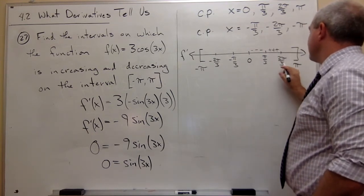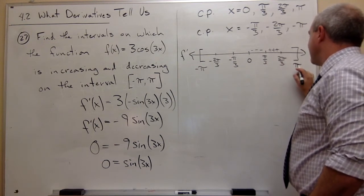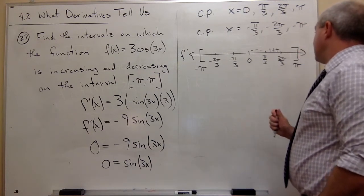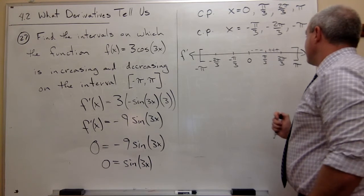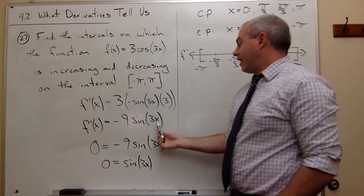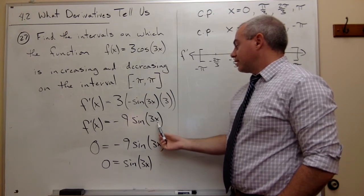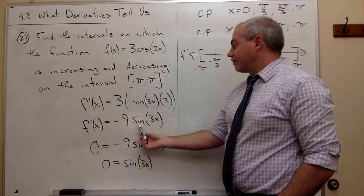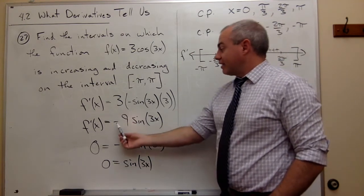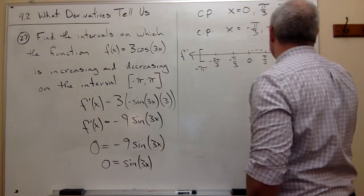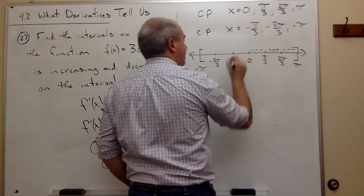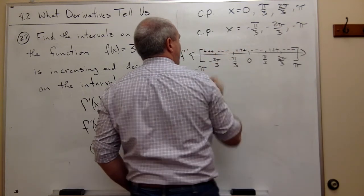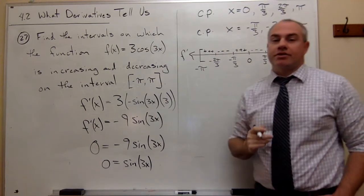Let's do another one. What about something between 2 pi over 3 and pi? How about 5 pi over 6? If I plugged in 5 pi over 6 here, the 3 and the 6 would cancel, and I'd get 5 pi over 2. Sine of 5 pi over 2 is 1. Negative 9 times 1 is negative, so these are negatives. We start to see the pattern here. These are going to be positives, negatives, positives. And you should check each one of those to make sure that that's the case.